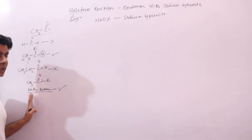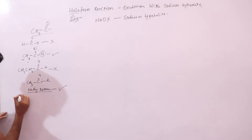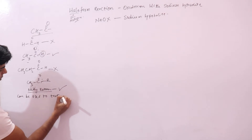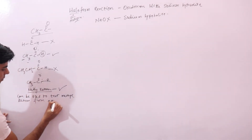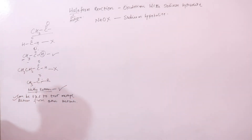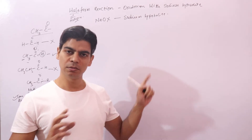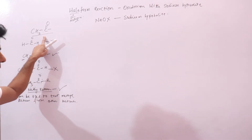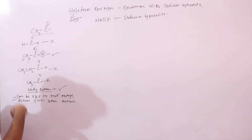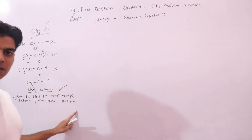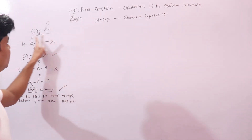This reaction can be used as a test to distinguish methyl ketones from other ketones. The important condition is that the aldehyde or ketone must contain the CH3CO group. Based on this, only acetaldehyde gives the haloform reaction among aldehydes, and among ketones all methyl ketones will give the haloform reaction. When using iodine specifically, the reagent is sodium hypoiodite and you get a yellow precipitate of iodoform.